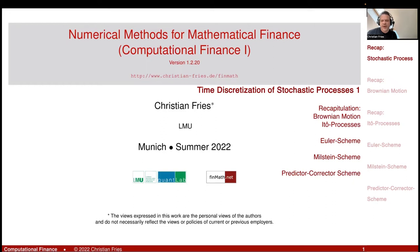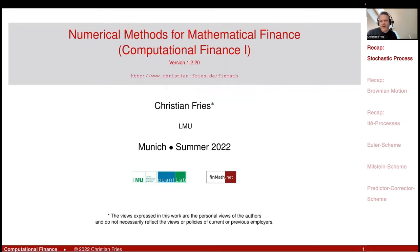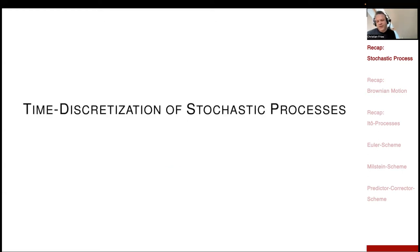Welcome to numerical methods. Today I'd like to start a new chapter. We had computer arithmetics, Monte Carlo method, random number generation, and we discussed Monte Carlo for time-discrete stochastic processes. Today I'd like to start a new chapter: the time discretization of stochastic processes. I consider now a time-continuous stochastic process and I would like to have a numerical scheme that creates a time-discrete approximation.